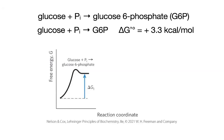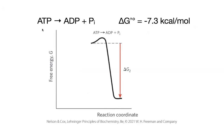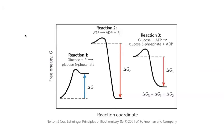Because that delta G naught prime — the overall change in free energy — is going to be a state function, what you can do is couple reactions together. You can take an unfavorable reaction and couple it to a favorable reaction. As long as that favorable reaction has enough energy and they share a common intermediate, you can combine them to use the energy from the favorable reaction to power the unfavorable one.